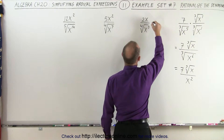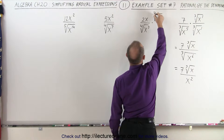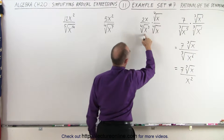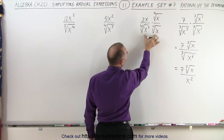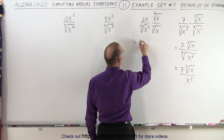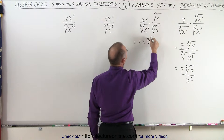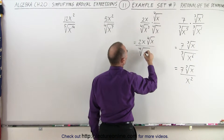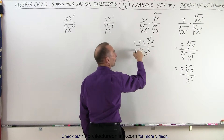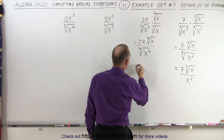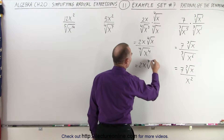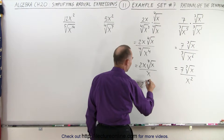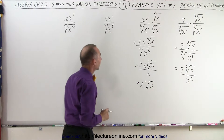Here we're going to do the same thing — we're going to multiply both the top and the bottom by the fourth root of x to the first power, because when we multiply these together that gives us x to the fourth, which is exactly equal to the root. So this is equal to 2x times the fourth root of x divided by the fourth root of x cubed times x, which is x to the fourth. We divide 4 by 4 and we get x to the first power in the denominator, so this is equal to 2x times the fourth root of x divided by x, and of course the x cancels out, so this becomes 2 times the fourth root of x.